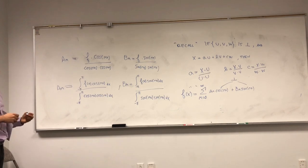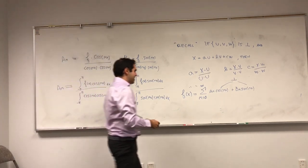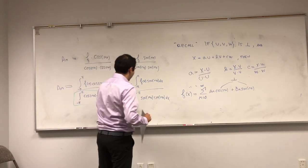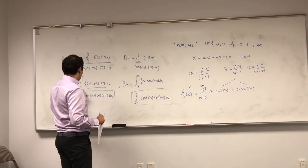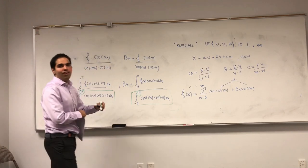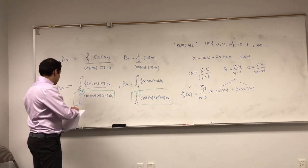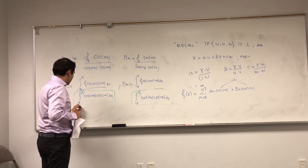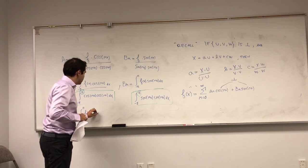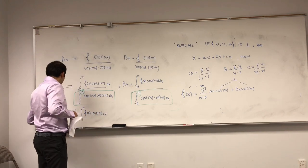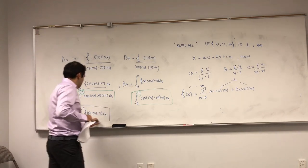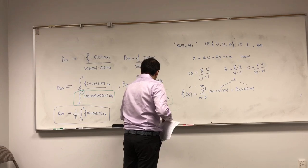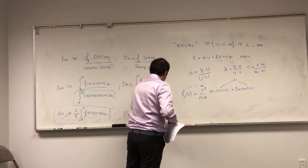With orthogonality we've solved our Fourier problem. Those integrals on the bottom, using double angle formulas, always equal pi. So the formulas simplify to: am equals 1 over pi times the integral from minus pi to pi of f(x)cosine(mx) dx, and bm equals 1 over pi times the integral from minus pi to pi of f(x)sine(mx) dx.